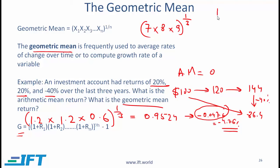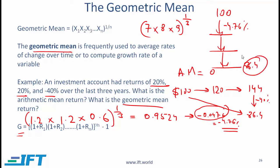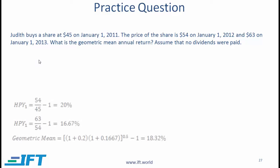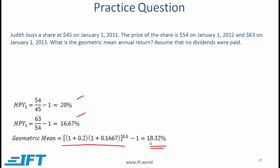To make sure you understand this concept, try the practice problem. You should calculate the return for the first year and the second year, then compute the geometric mean. The exponent is 0.5, which is 1 over 2 since we have two periods. Subtract 1 to get the return. You should get 0.1832, which is 18.32%.